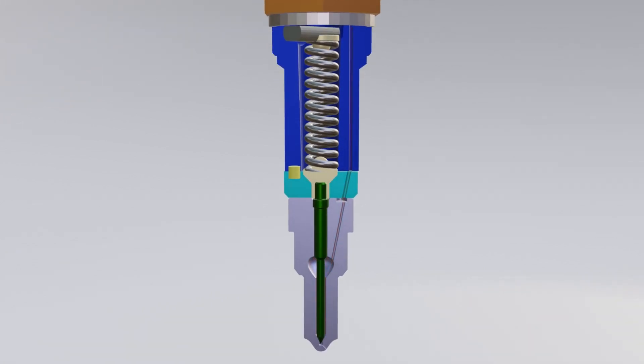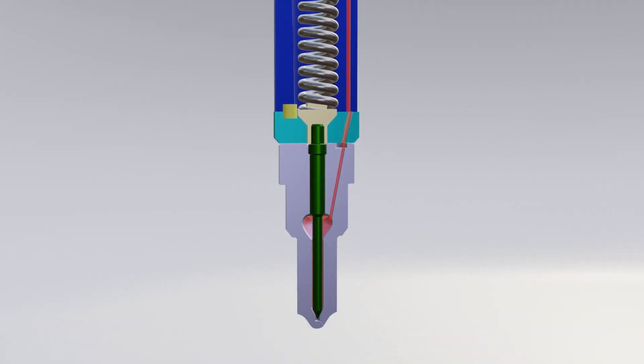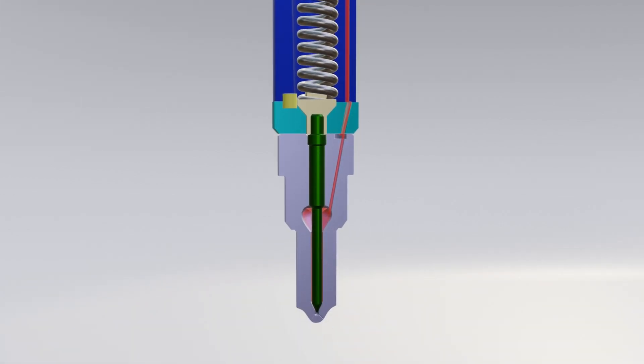Let's see how it works. Fuel goes from the high pressure line to the body, after the spacer, and reaches the nozzle body.